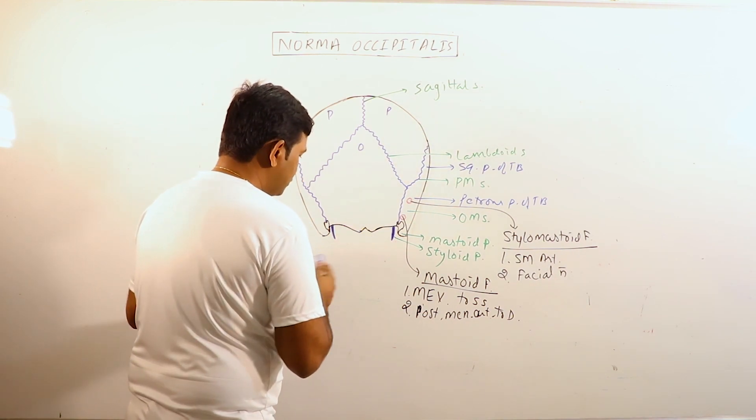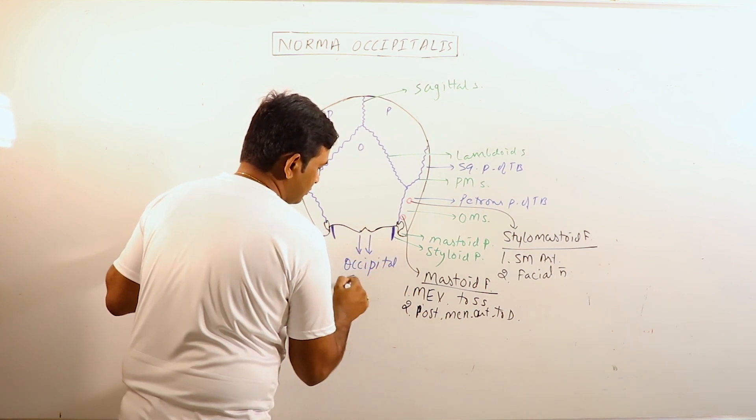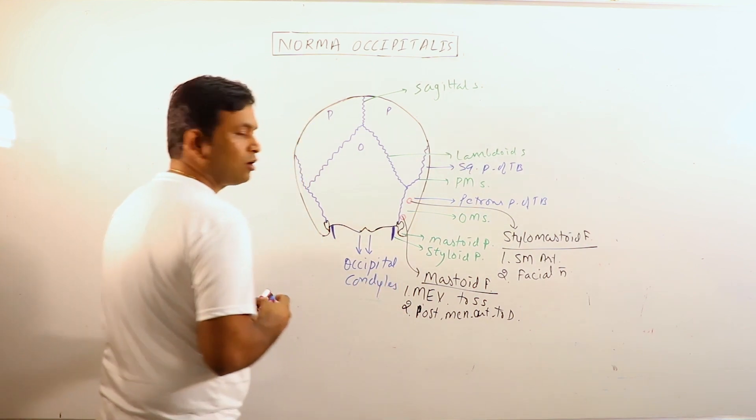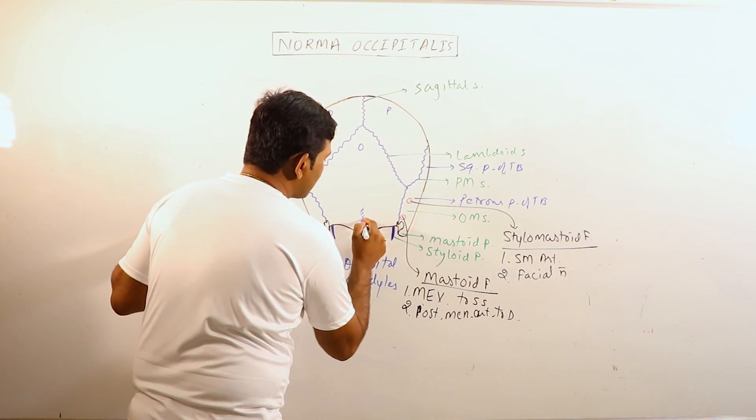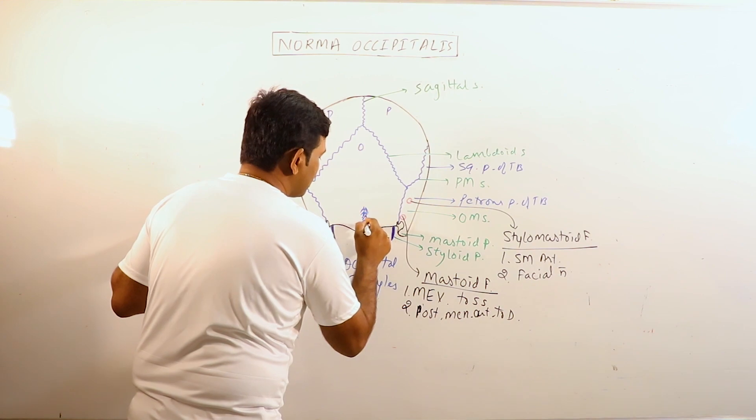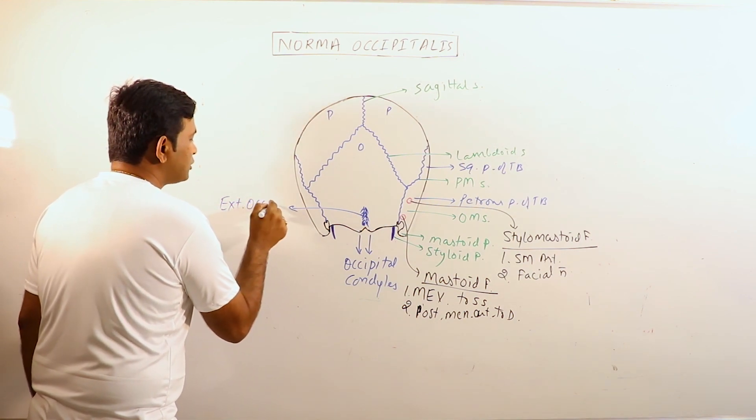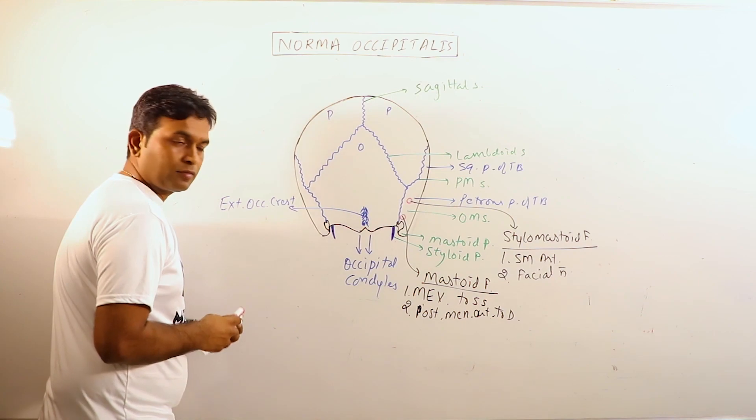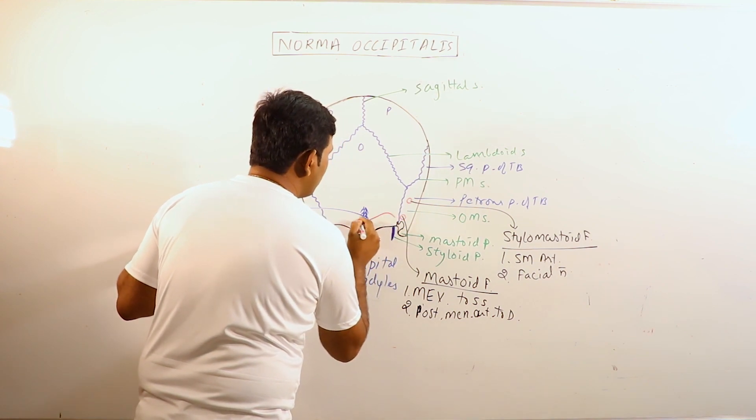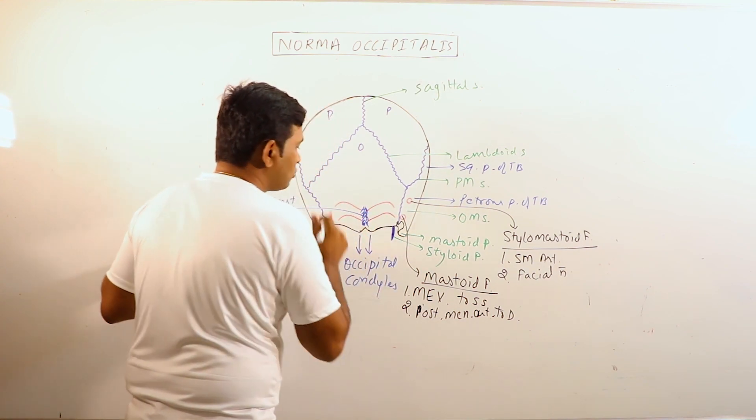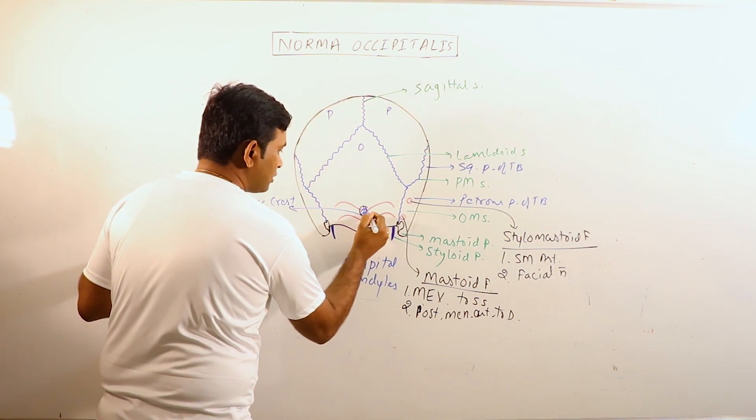These structures, these protuberant structures are basically occipital condyles. We can observe a crest here. This crest is known as external occipital crest. We can observe two bony ridges coming out of this crest.